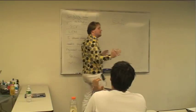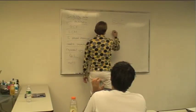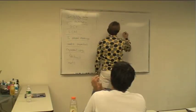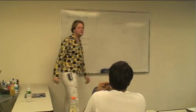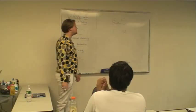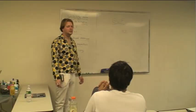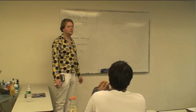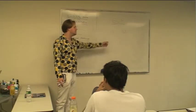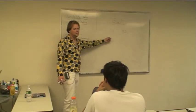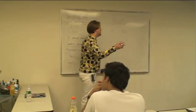Greatest common factor — let's play. Here we go. 14 and 42, what is it? 7. No. 14 itself. 14 divides evenly into 42 three times.